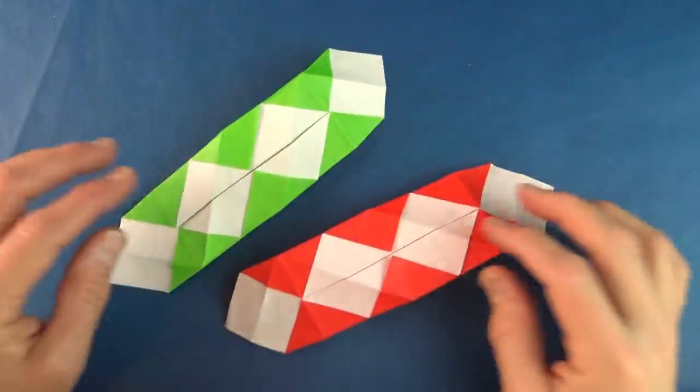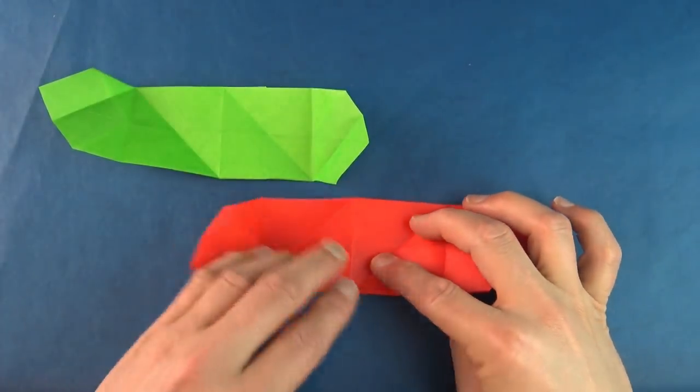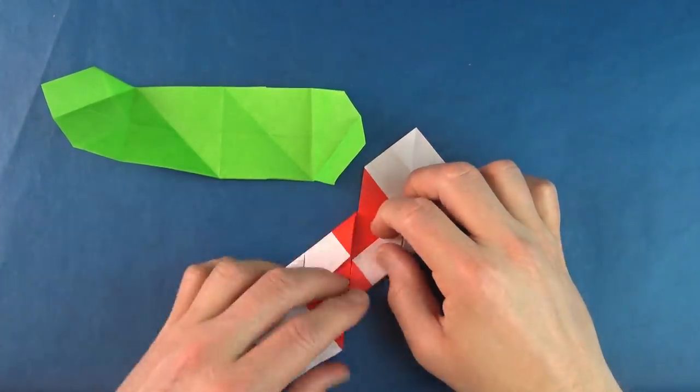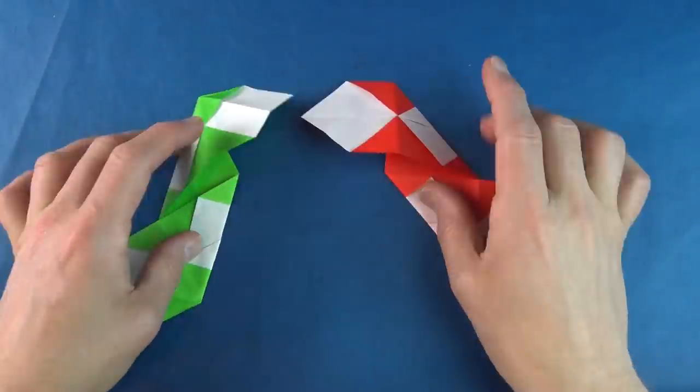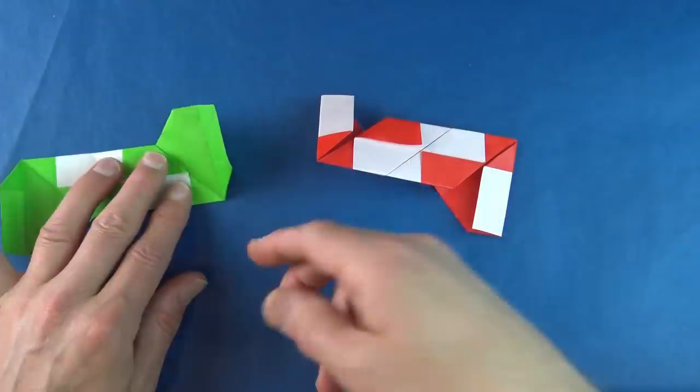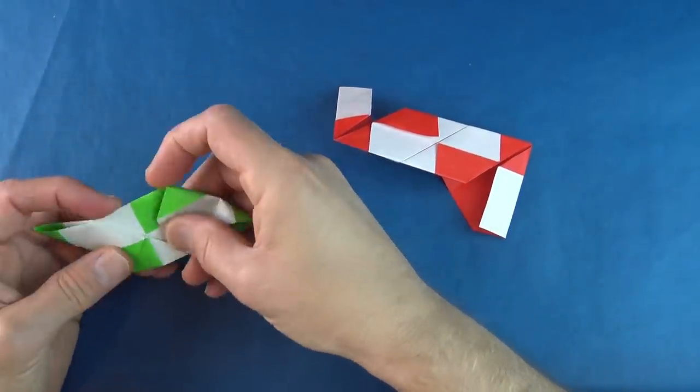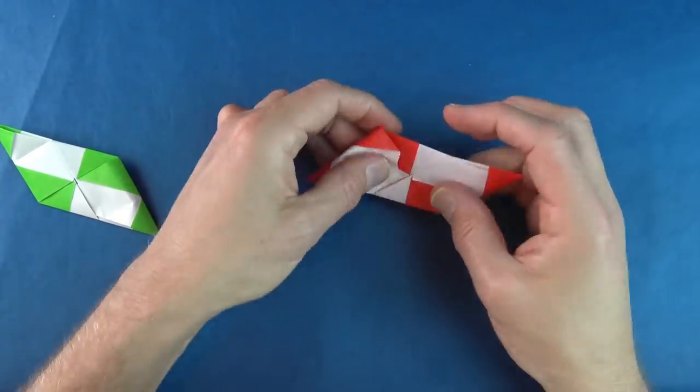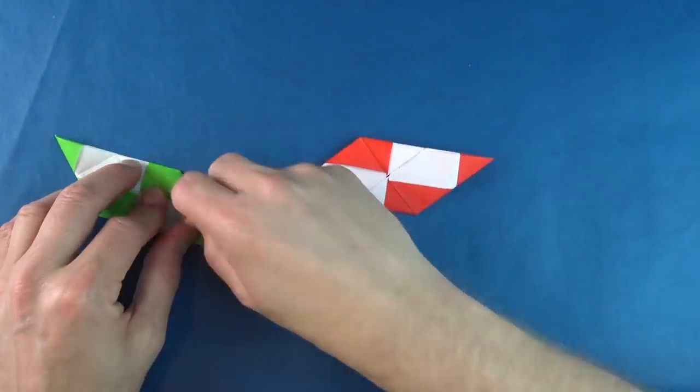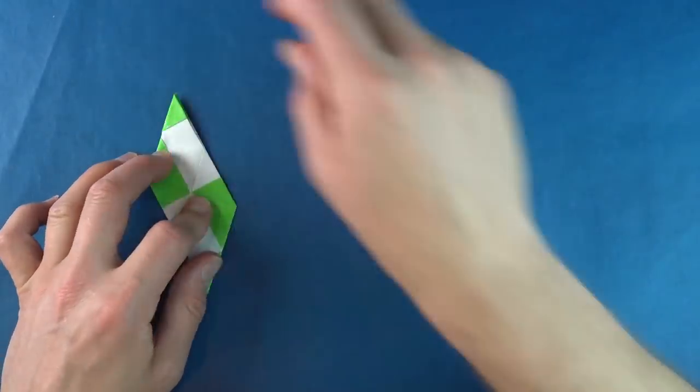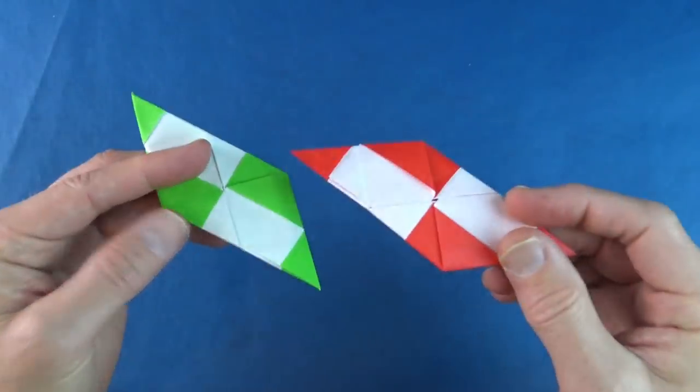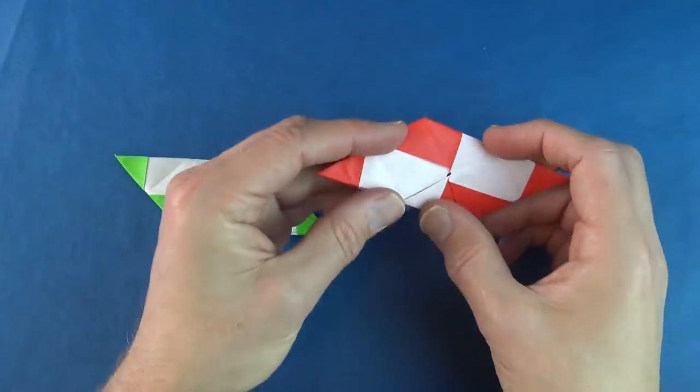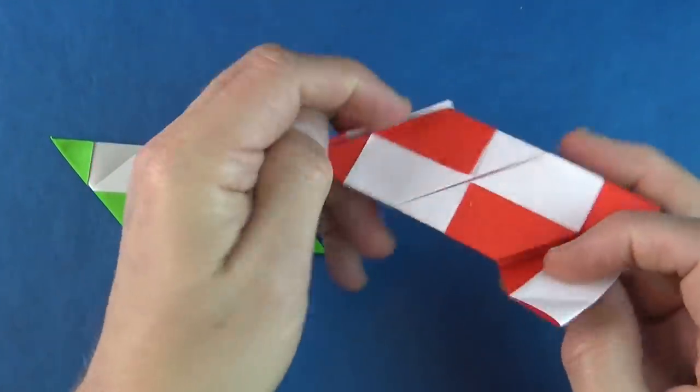And now repeat on the second one. Turn them over and do as we did in method number two. Crease them nice and sharply. And here we have the harlequin flickers. And now to put them together, pull out the flaps.